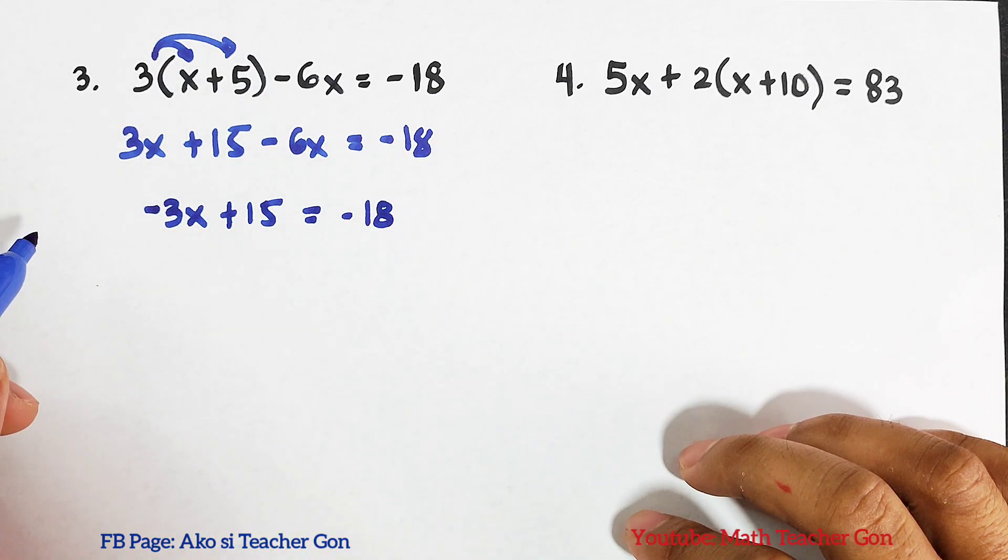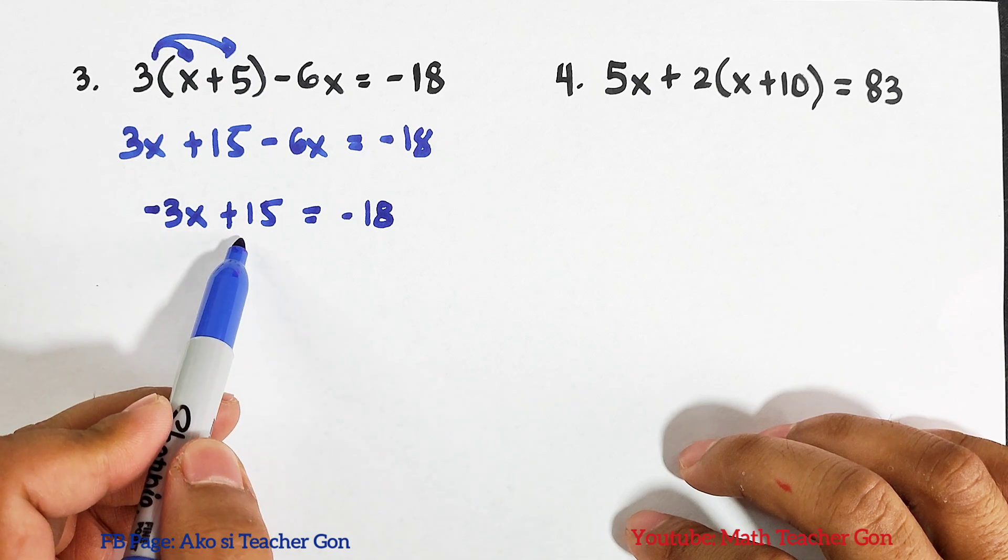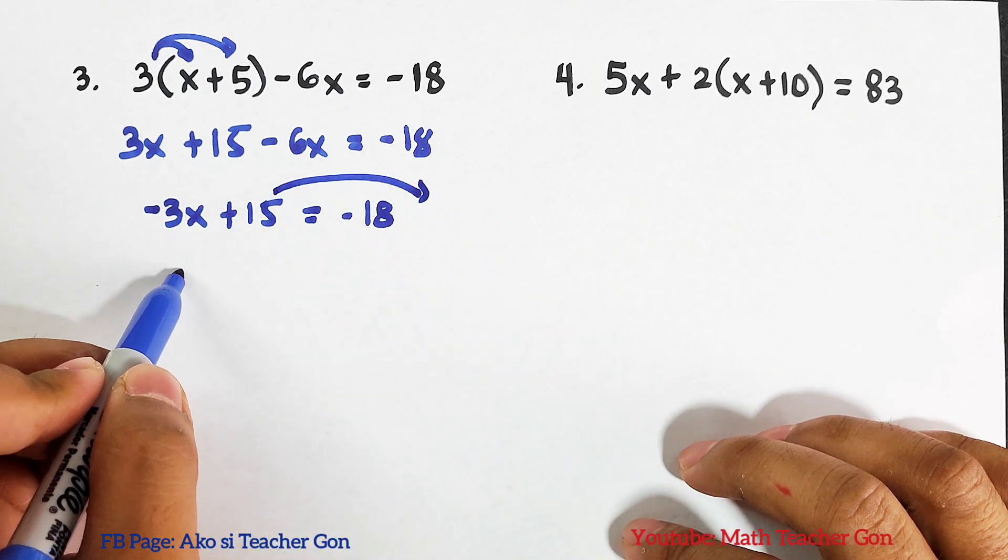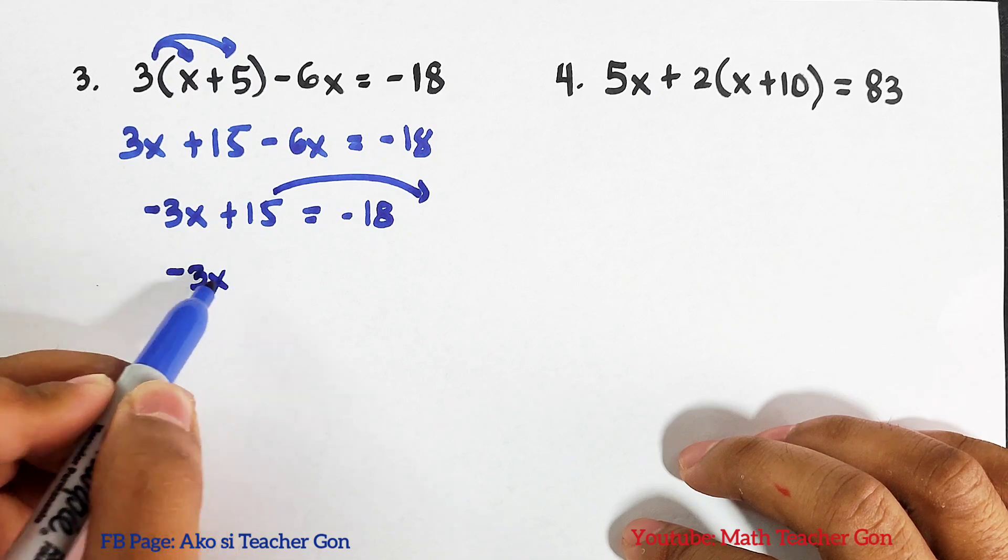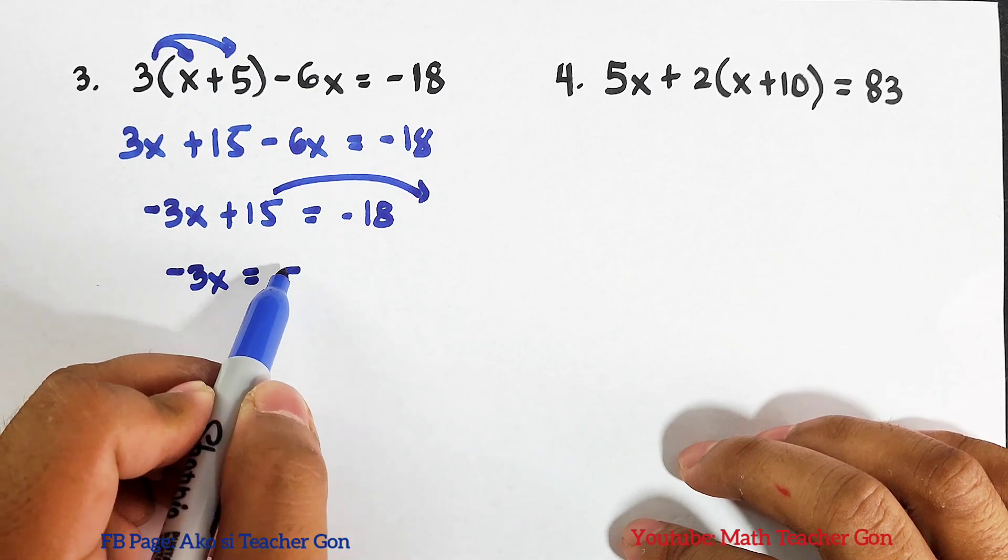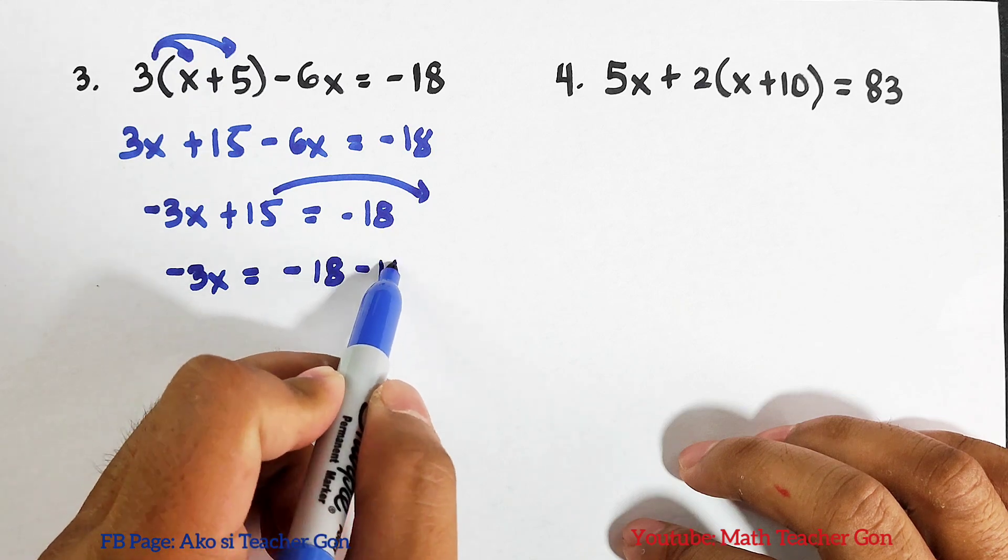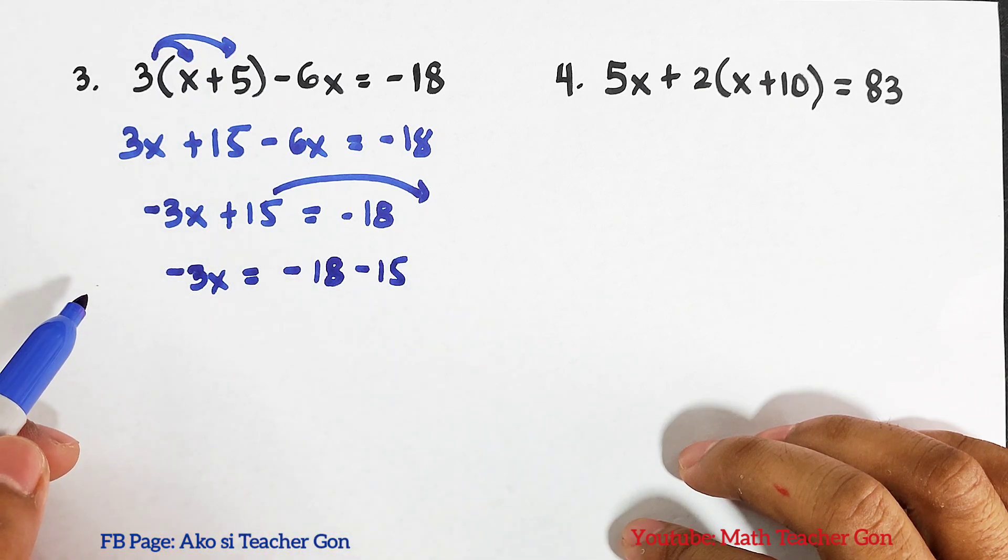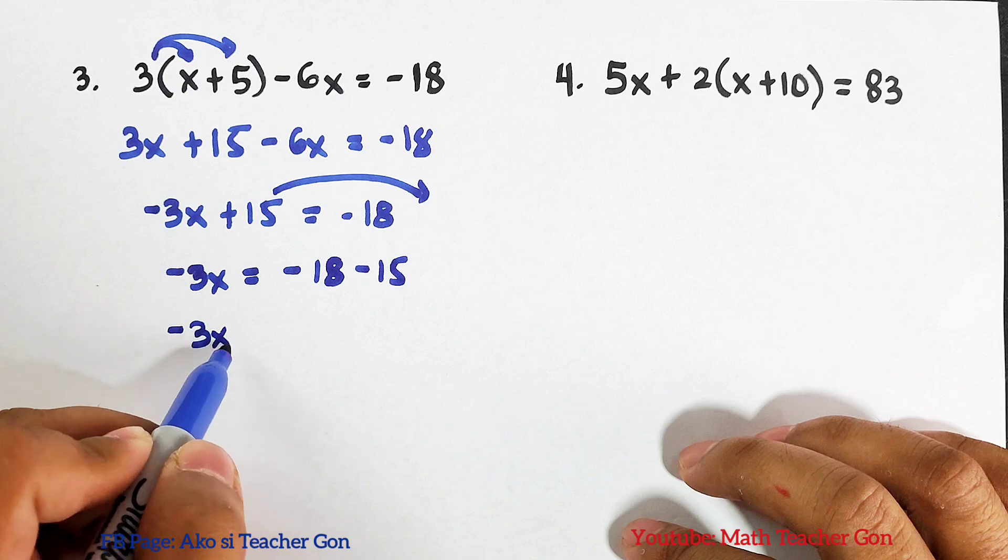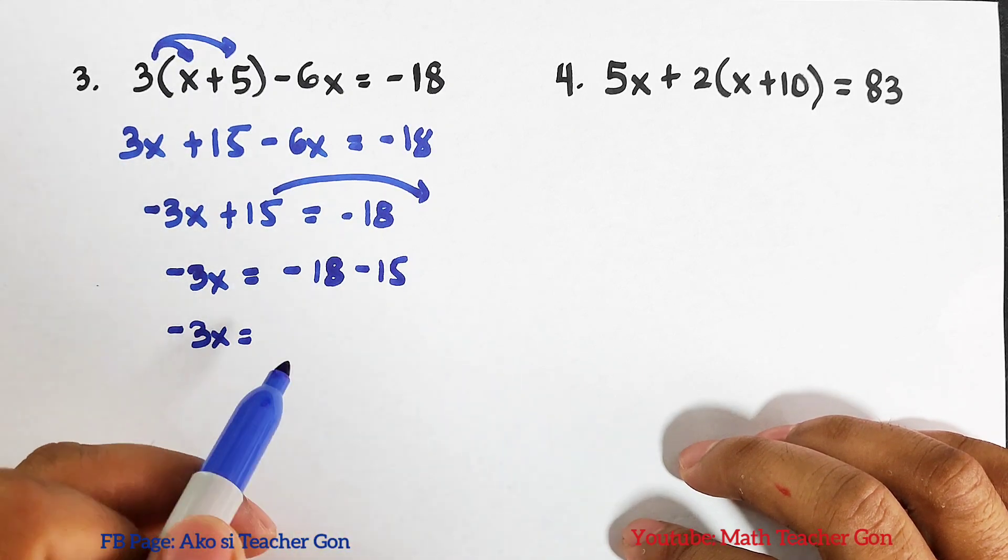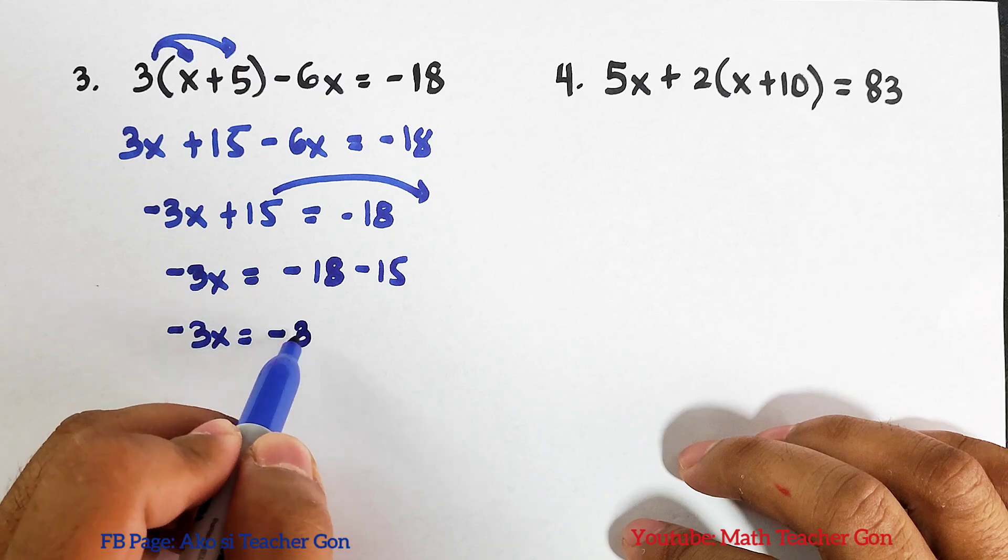Now okay, we will transpose 15 to the other side. This is negative 3x is equal to negative 18. Transpose this, minus 15. This is negative 3x is equal to negative 18 minus 15, that would be negative 33.